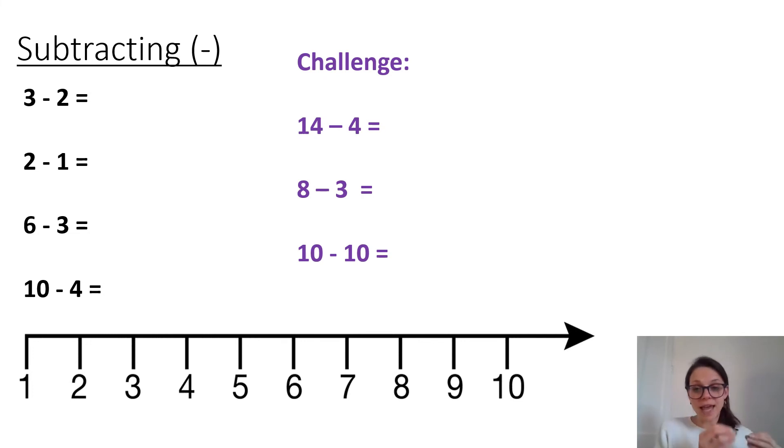I'm going to do the first one with you. So three, take away two. And on our number line we always start at that first number. So I'm going to start at three. But this time I'm going to move backwards. Our numbers should be getting smaller. We are taking the numbers away. So how many jumps do I need to do if I'm doing 3 - 2? I need to do two jumps don't I?